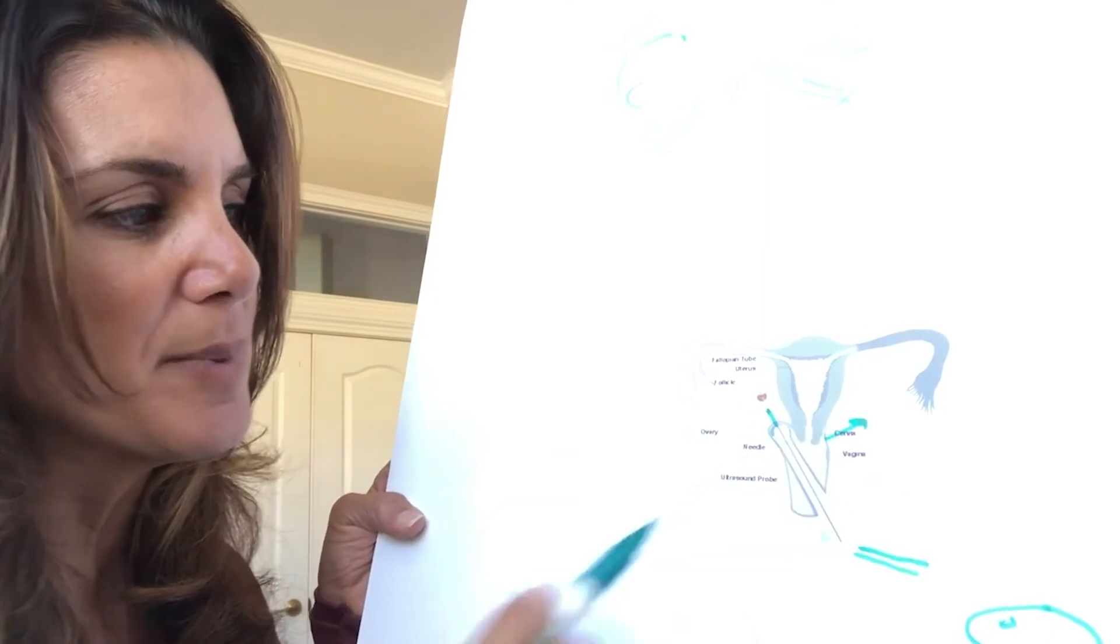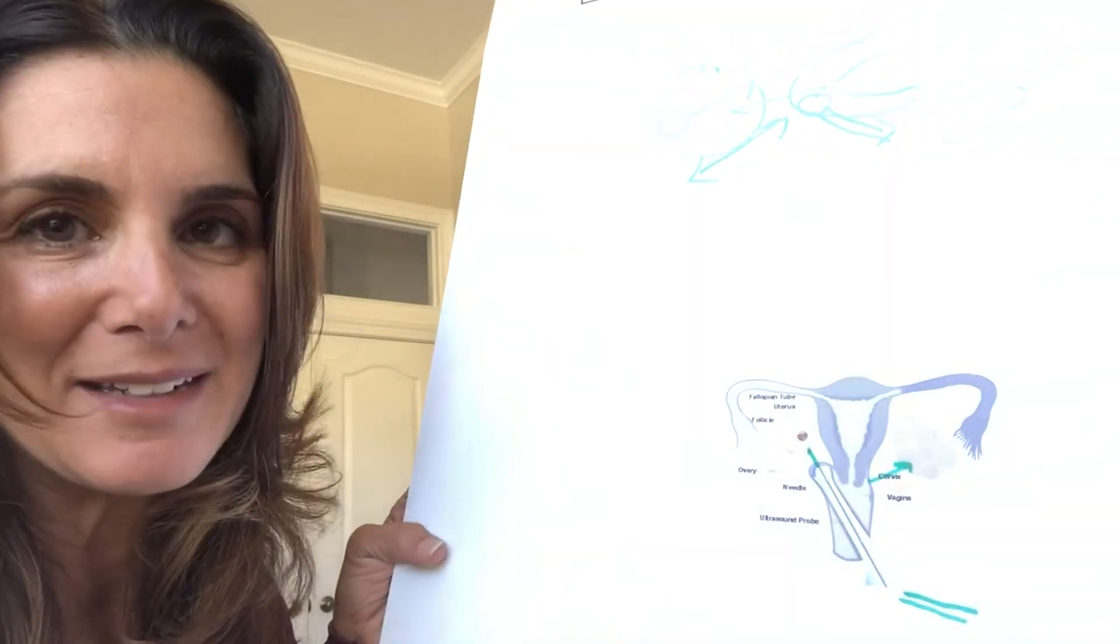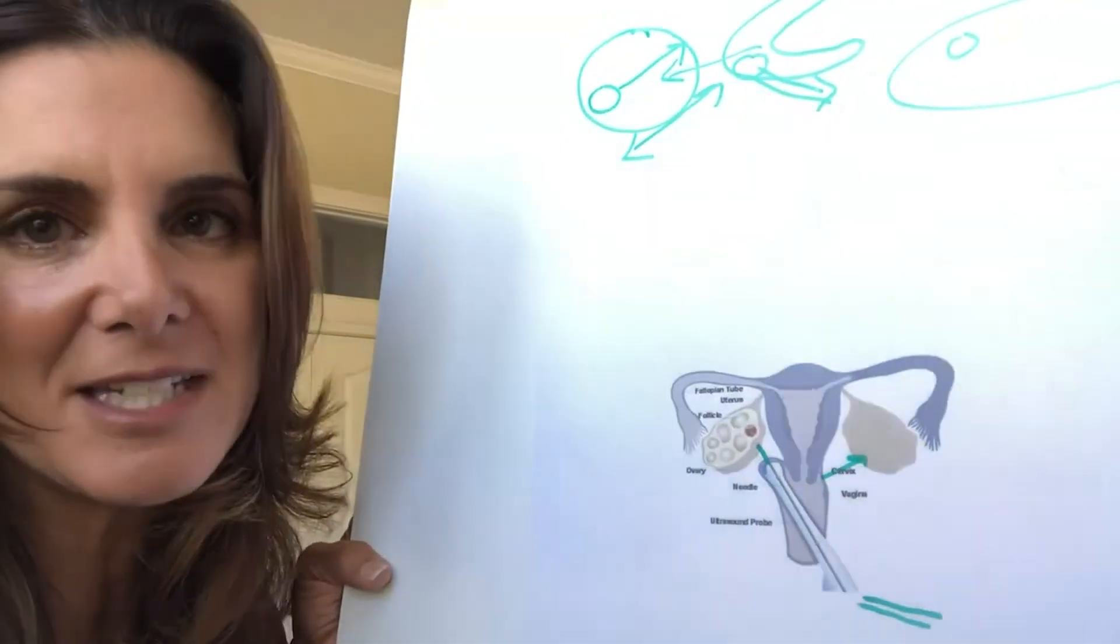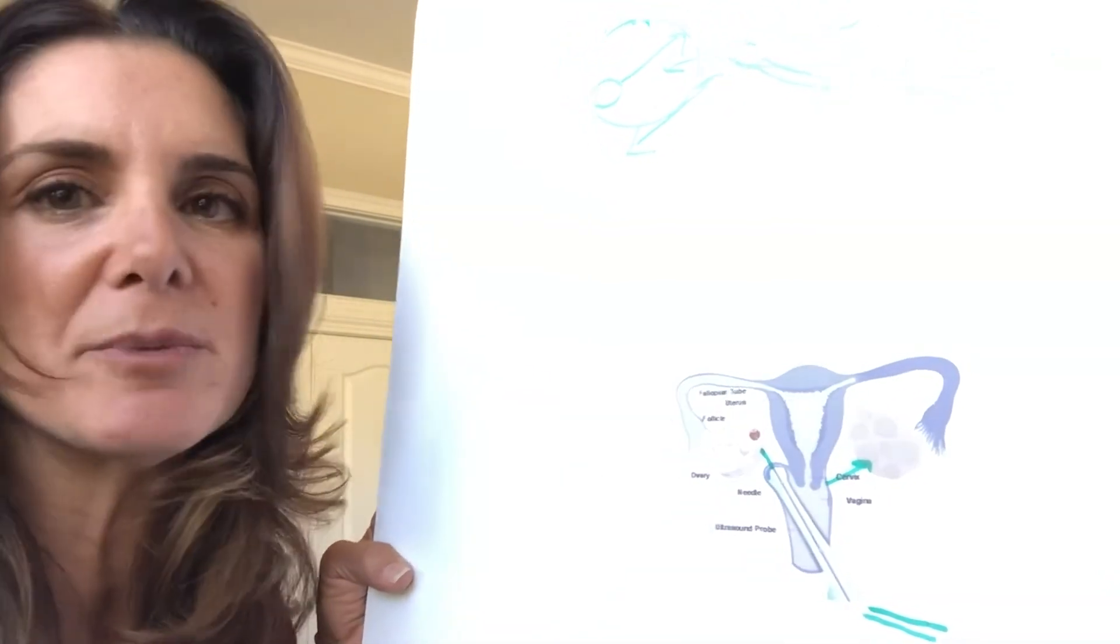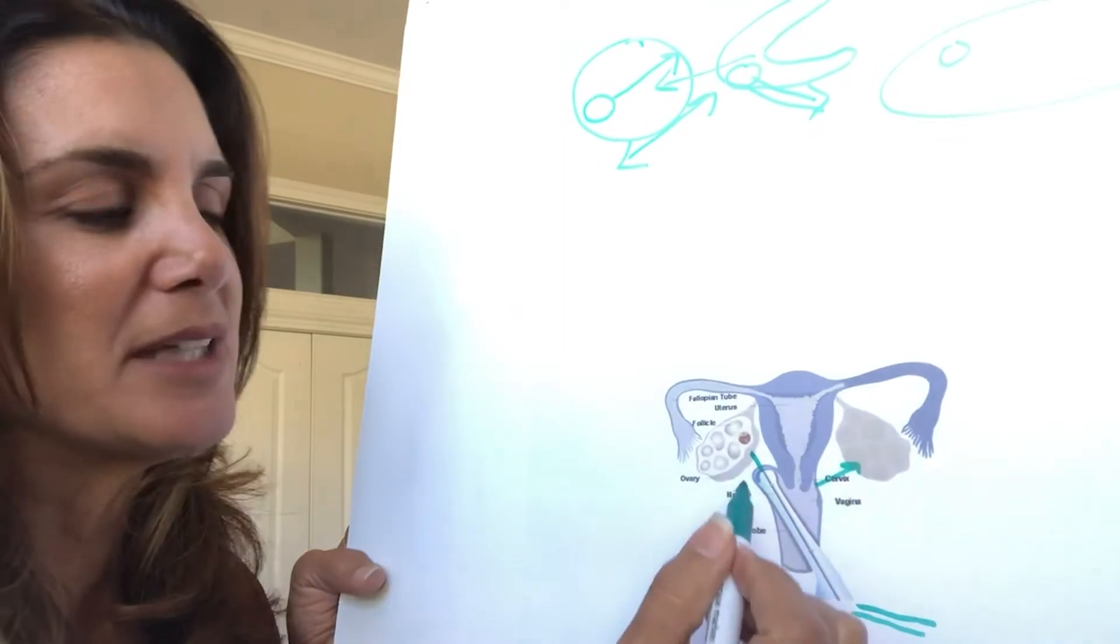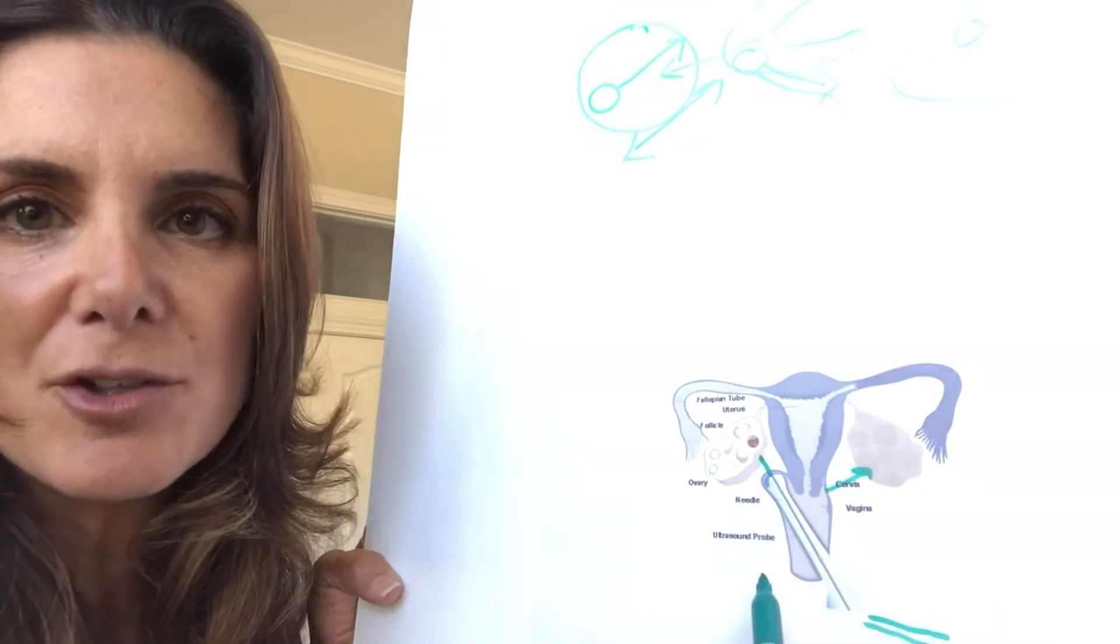Because we're going in vaginally and we're doing multiple punctures, that can hurt, that can cause pain. That's why we always want you to be under anesthesia when you have this procedure done. We don't want you to be in pain, we don't want you to be flinching or moving, so that we can be very direct and deliberate when we go in with the needle.